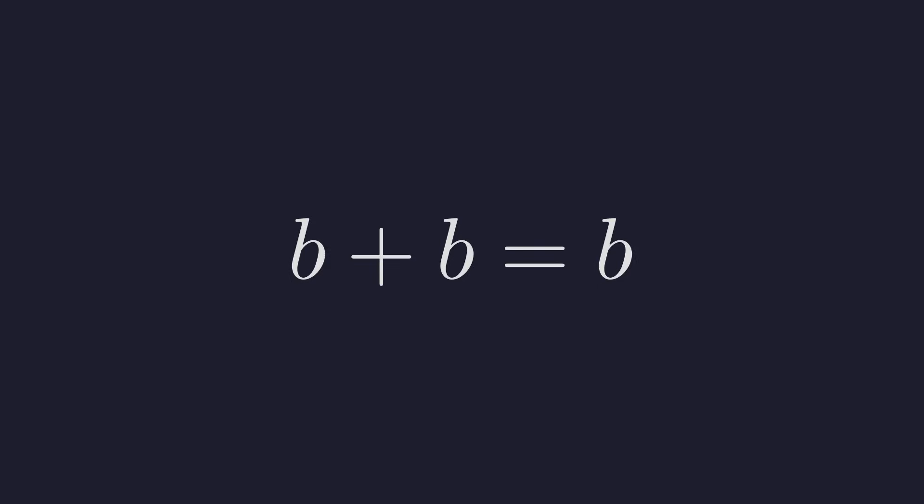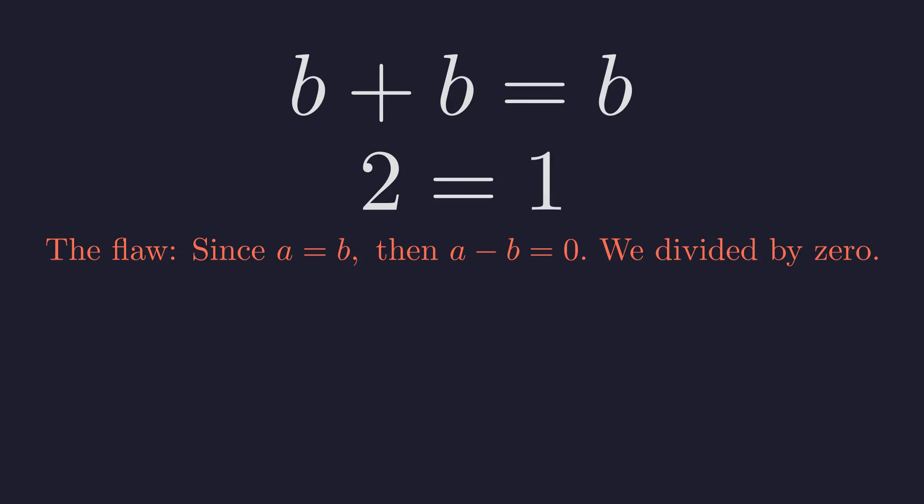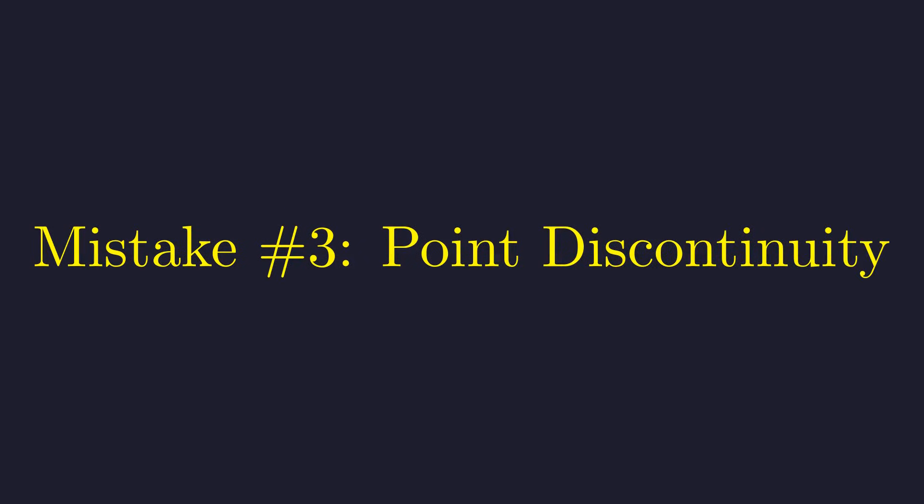This becomes b plus b equals b, or two b equals b. Finally we divide both sides by b and we arrive at the absurd conclusion that two equals one. The error occurred when we cancelled. Since a equals b, the term a minus b is exactly zero. Our cancellation was an illegal division by zero.